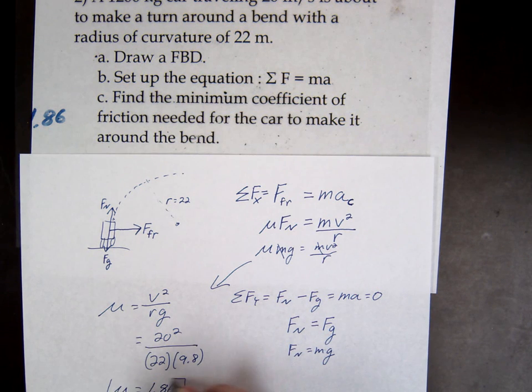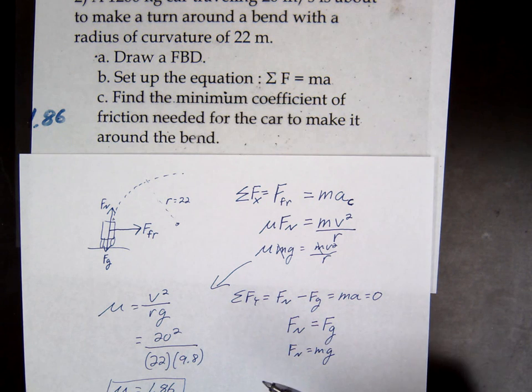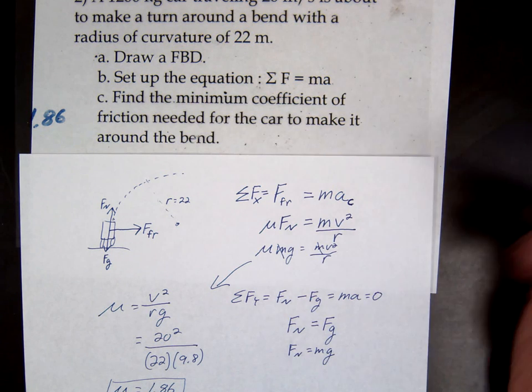What this means is this is the minimum mu to make the turn. If mu was higher then you'd be okay. If mu was lower, what would you have to do? Slow down the car. If you wanted to make the turn you'd have to slow down the car, otherwise you'd skid out and keep trying to go in a straight line.